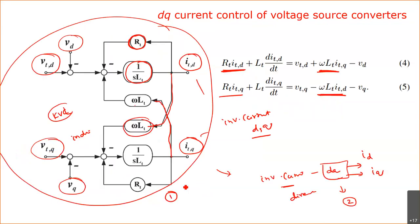The advantage of the voltage-controlled approach is that current sensors are not required. For the direct approach, we simply use three current sensors, measure the three inverter currents, and transform them into the I_D and I_Q reference frame. Once this is done, the next step is to remove the coupling between the D and Q axes by subtracting the cross-coupling terms.